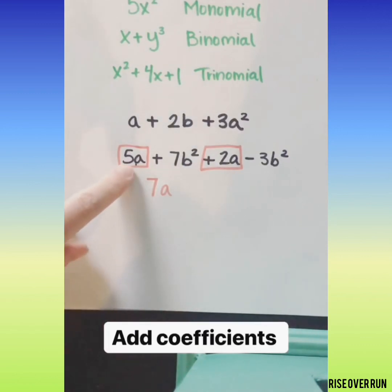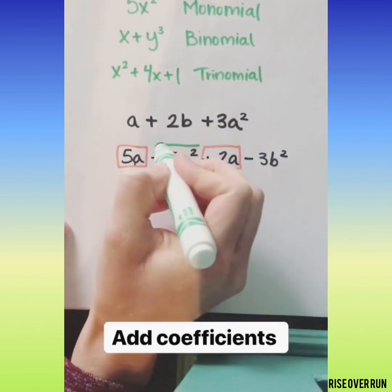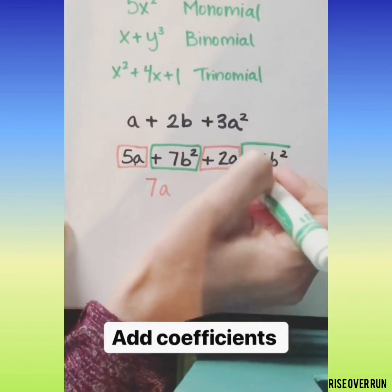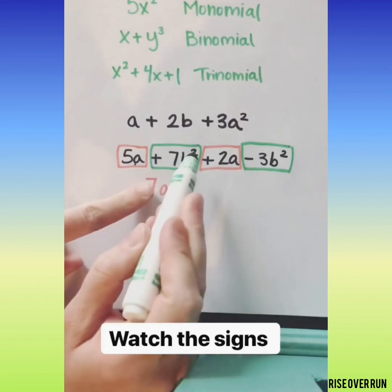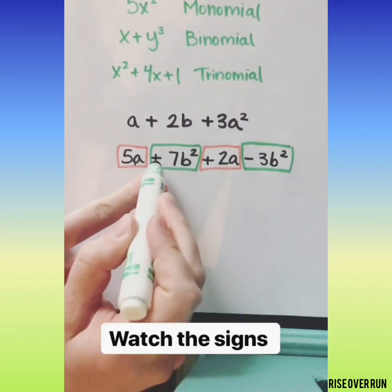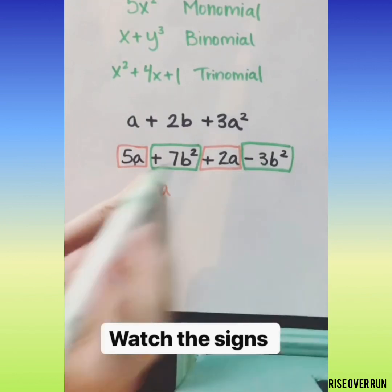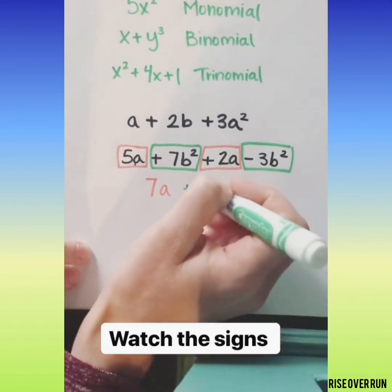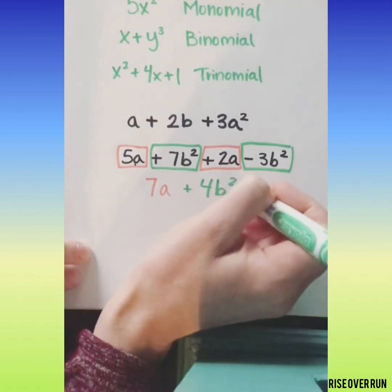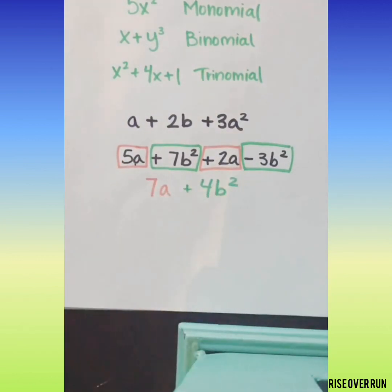When you're combining like terms, you can add the coefficients and then you keep the variable and you keep the exponent. So let's look at these. 7b squared and a negative 3b squared. If you're going to use this method where you box the term, be sure you box the sign in front of it. We have to remember that this is a negative, we're taking that away. So we do 7 minus 3 to get a positive 4 and then we keep b squared. You will never change the exponent if you're just adding or subtracting like terms.